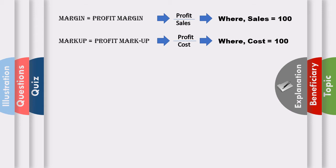Profit margin means profit divided by sales — that means profit on sales. Profit margin means profit on sales. In the same way, profit markup means profit on cost — that means cost is the base over which profit is calculated.